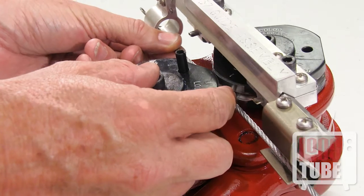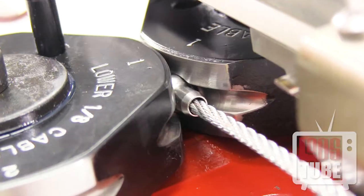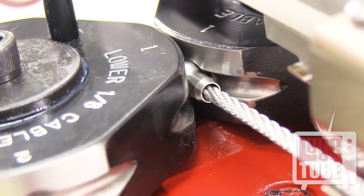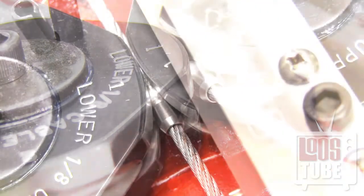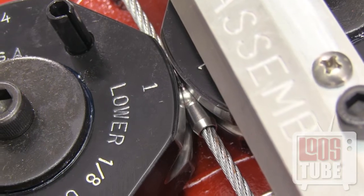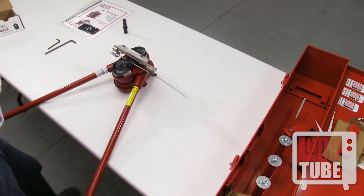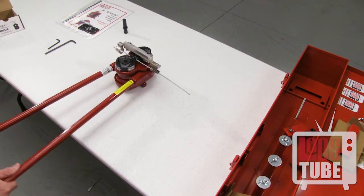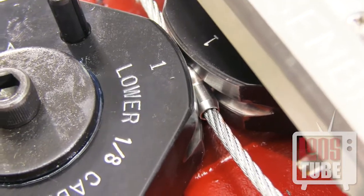Place the tip of the ball at the beginning of the socket at the number 1 position. If swaging single shank ends, be sure that the shank is pointed to the right, as shown. You may now make your first pass. Pump the handle slowly, paying attention that the fitting is properly aligned.